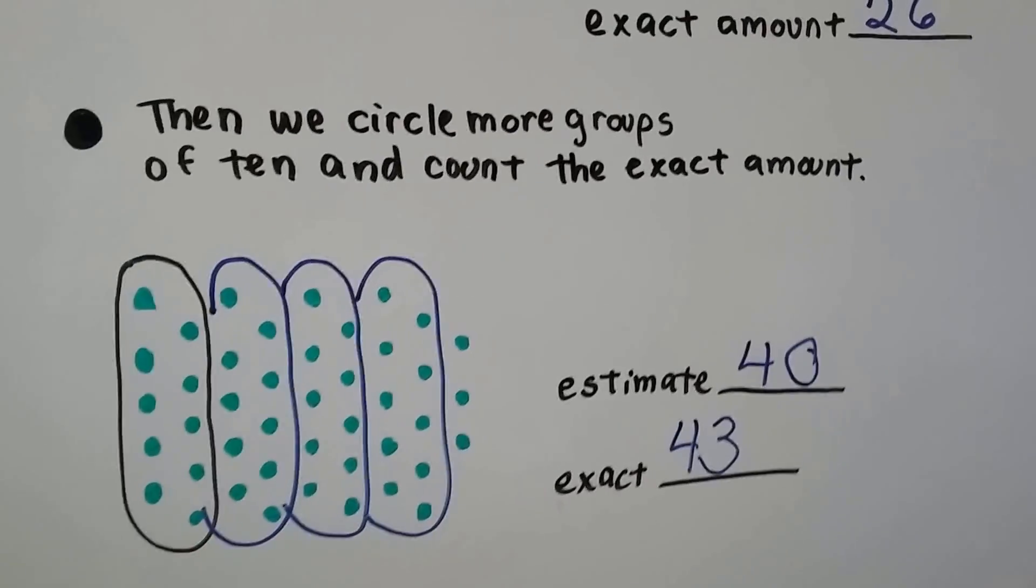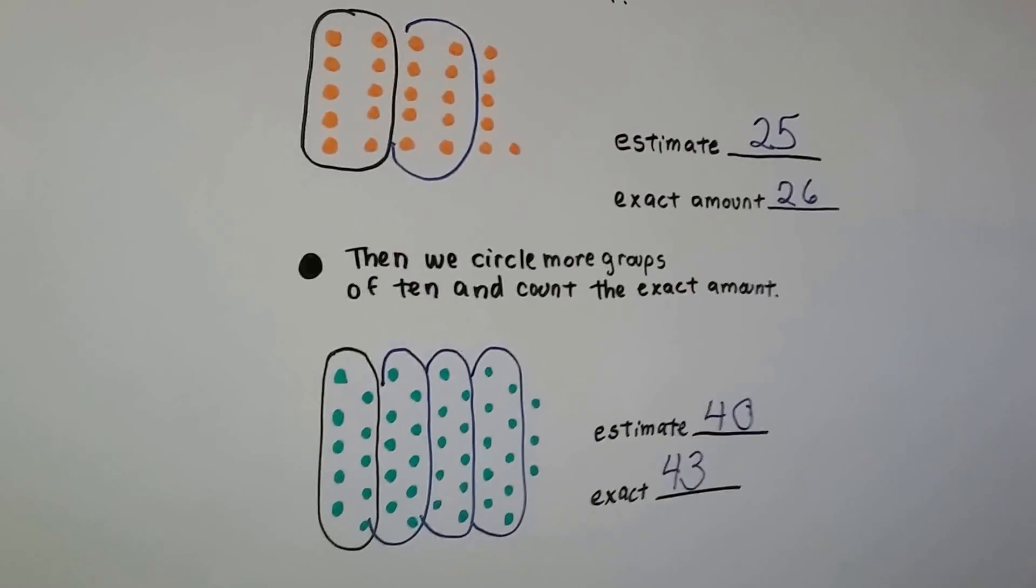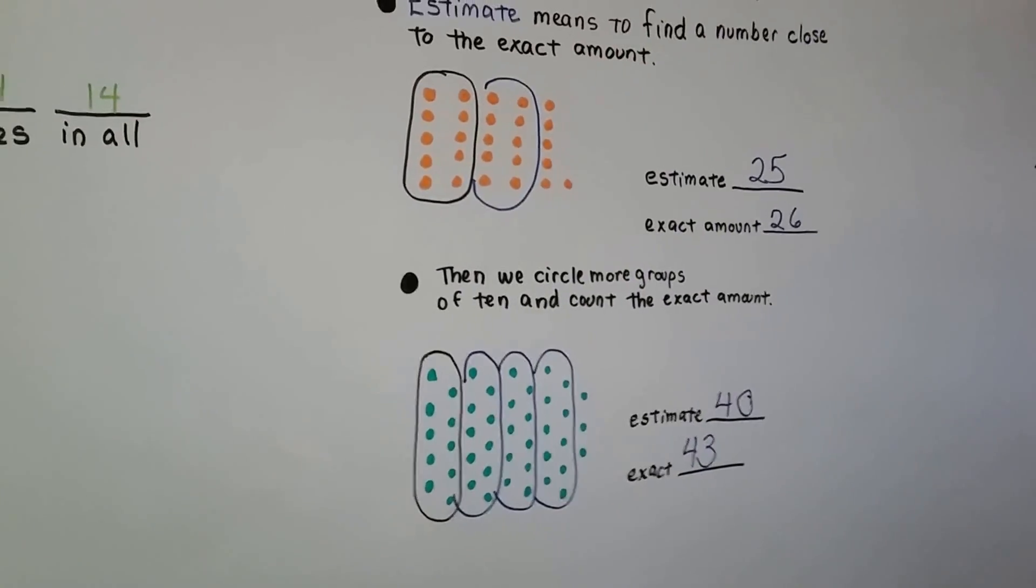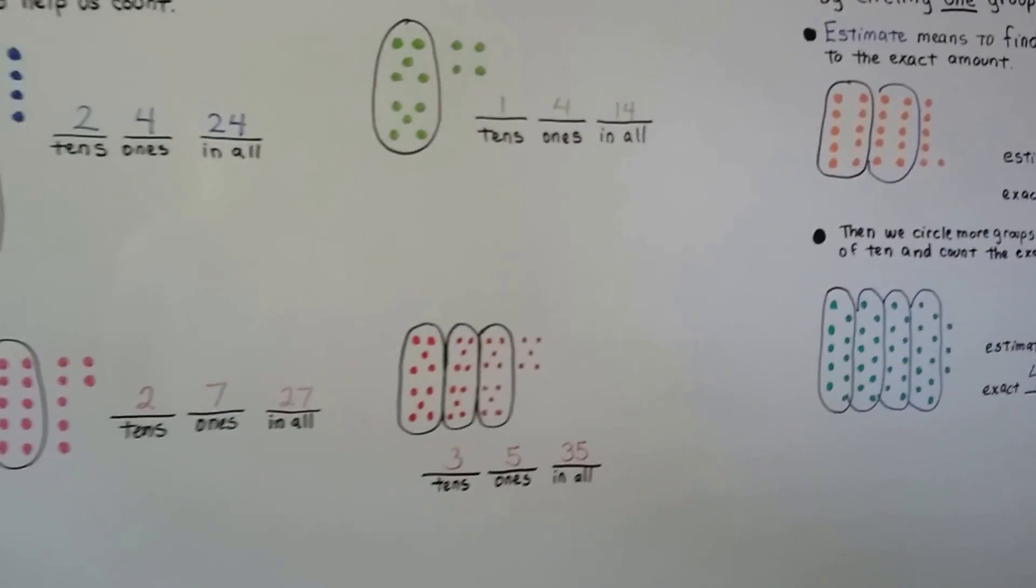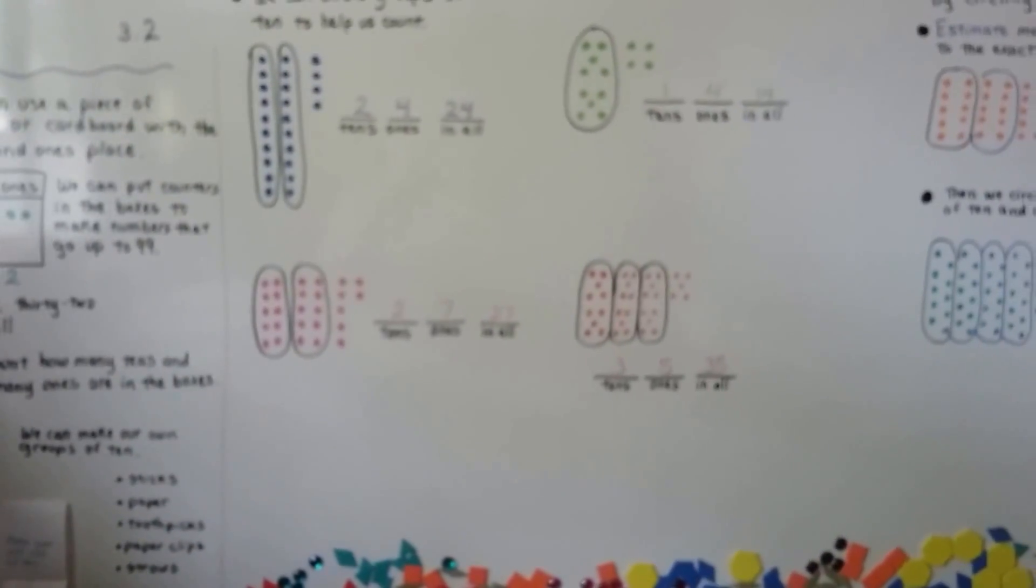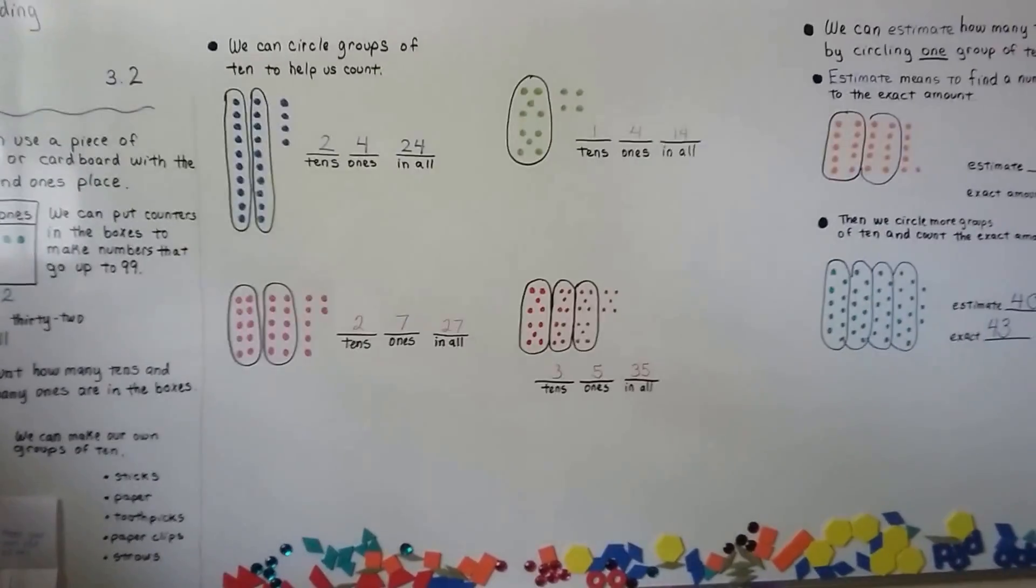When you estimate, you try to make a smart guess. It's called an educated guess to how many you think there might be. Then you can count and find out how many there exactly are. So make your own groups of ten. You can use many things to make your own groups of ten.